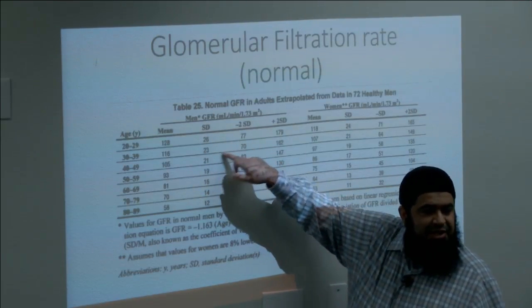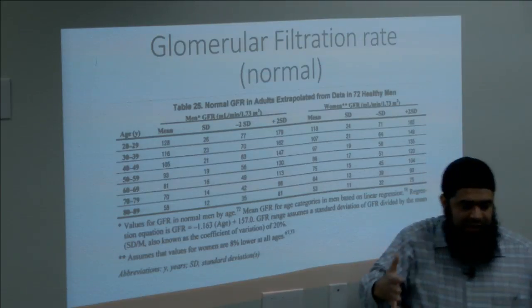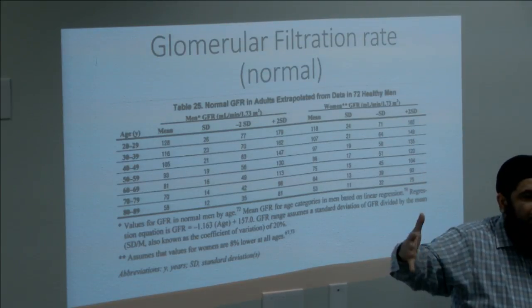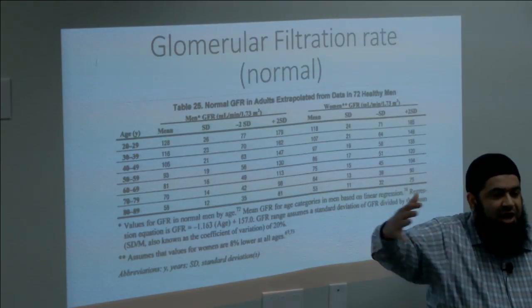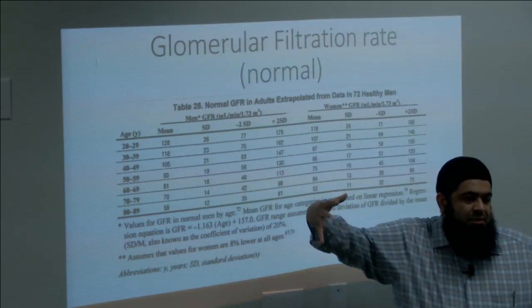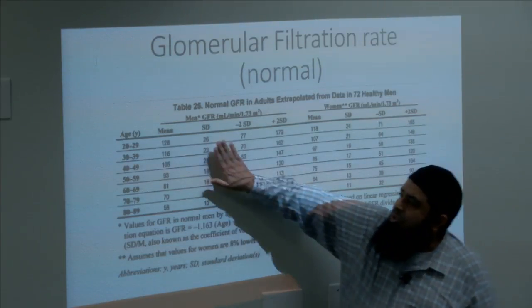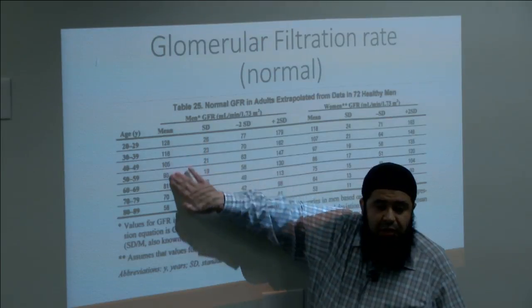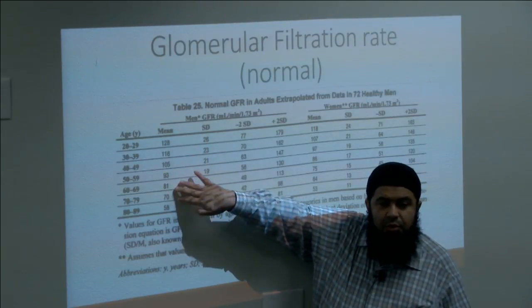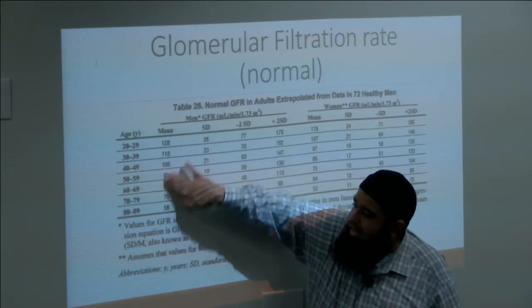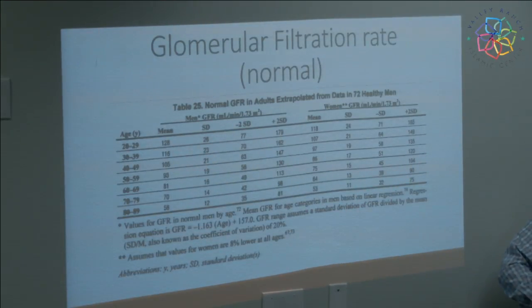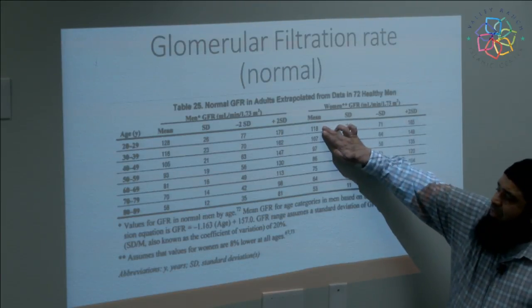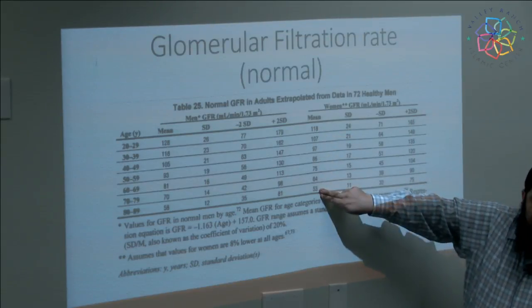Standard deviation tells you how much the data is spread. The greater the spread, the more variable the data and the less reliable the mean. The mean GFR at different ages reflects normal kidney function across the lifespan. Glomerular filtration rate, or GFR, tells us what your kidney function is like. Women have a lower GFR than men, and for both it decreases over time with age.